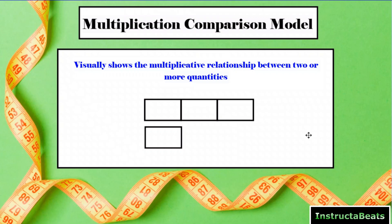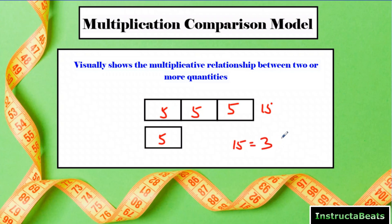Here we have our multiplicative comparison model. It's going to visually show the multiplicative relationship between two or more quantities. So here we have three equal groups, and here we have one — let's just put five here. Which means these are equal to each other, so we have to put five in each. We could say that 15 is three times more than five. We're comparing numbers using multiplication, not addition and subtraction. So this is the model — let's take a look at when you'd want to use it.